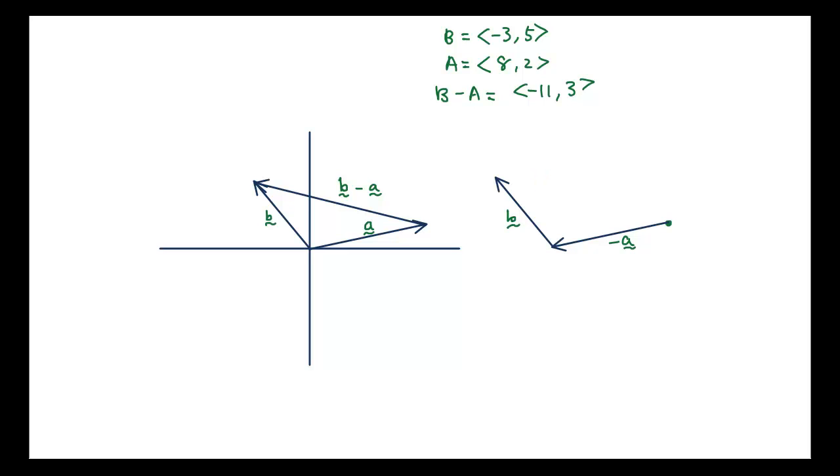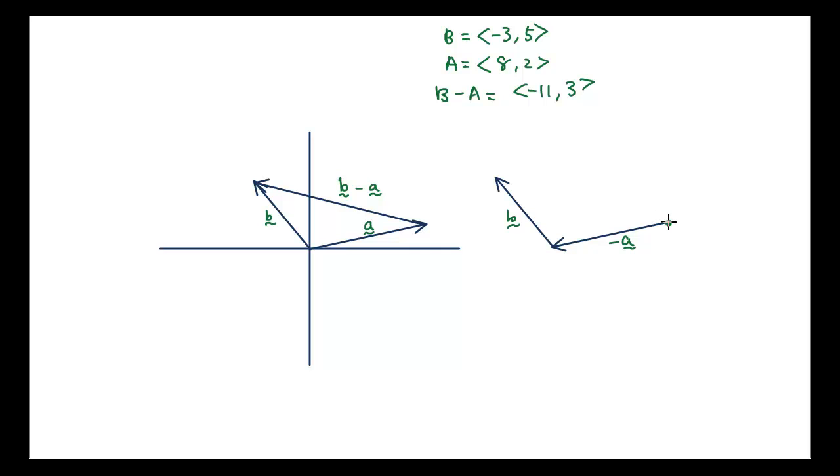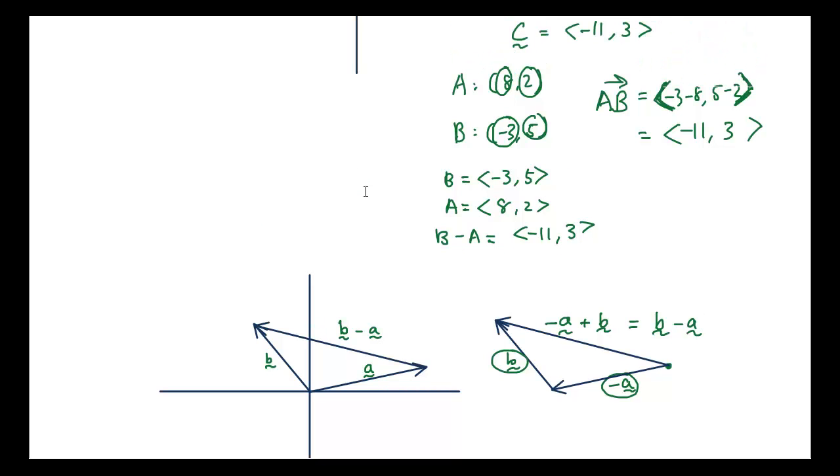Then this vector that is joining the tail of vector negative A to vector B using vector addition, it's this vector plus this vector. So therefore, this vector is equal to negative vector A plus vector B, which is the same as vector B minus A. So that's the geometric definition of how this works.